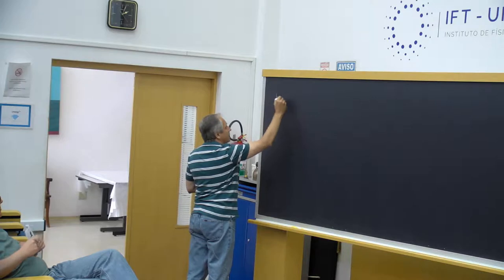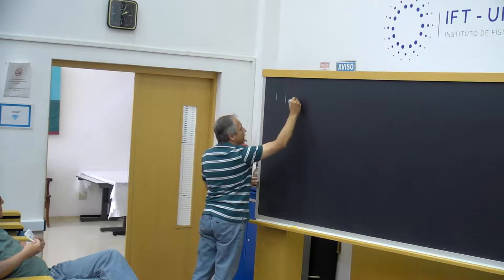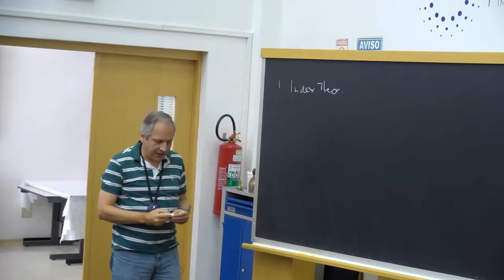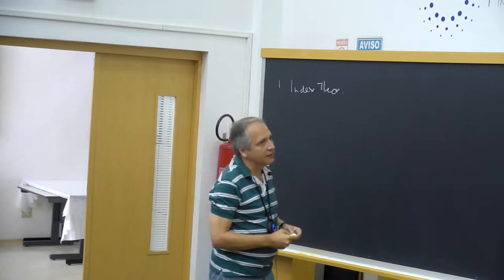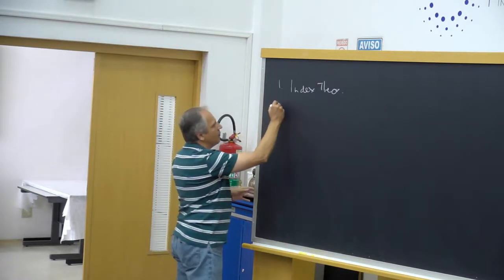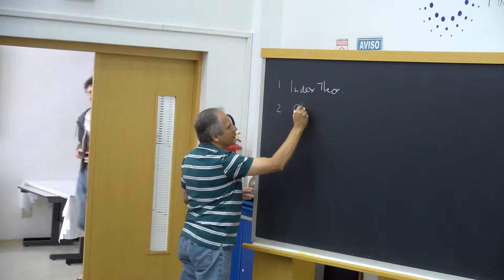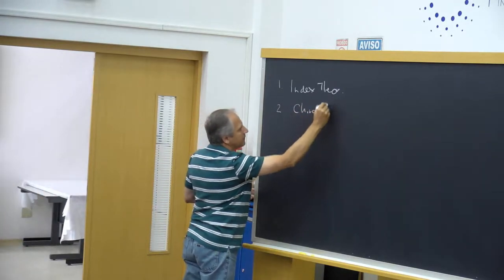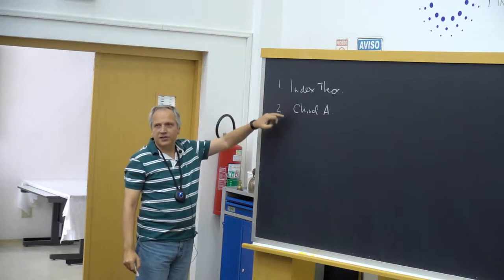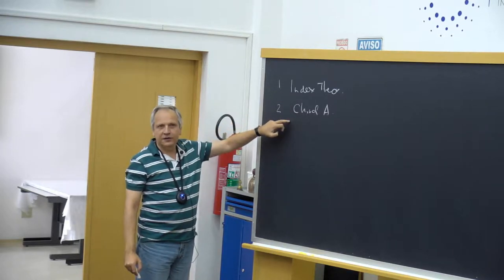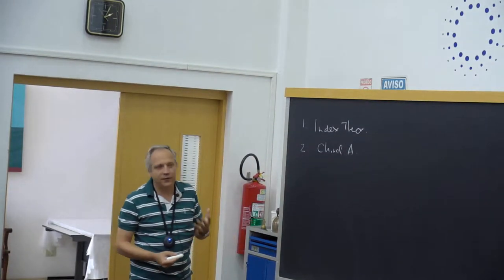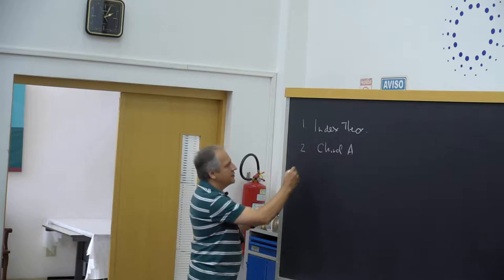I will start with index theorems. Index theorems were introduced, in a sense, in the 60s by the Atiyah-Patodi-Singer index theorem. I will go with anomalies, and the first anomaly will be the chiral anomaly. We'll consider what is called the global chiral anomaly — it's exactly the index I will derive here. It's a different name for calling the same object, which is a point of very natural unification between physics and mathematics.